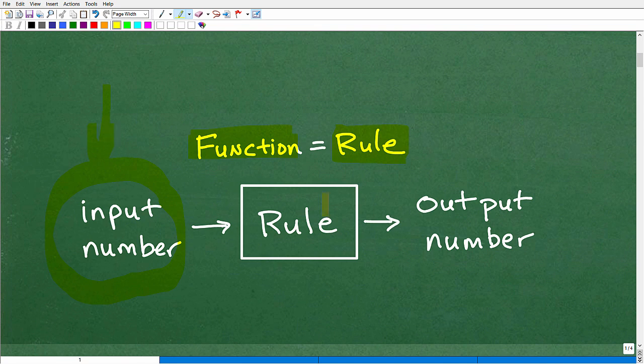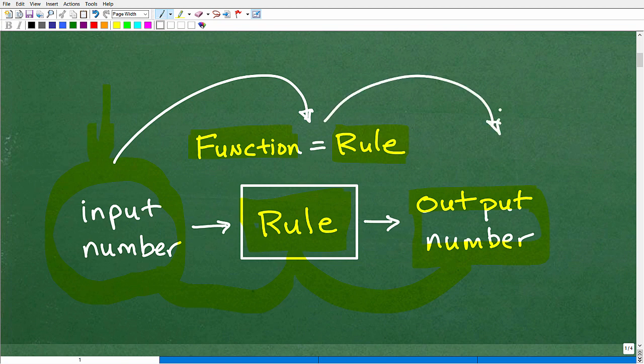And when I take that number, I'm going to apply a certain rule to it. And then I'm going to give you an output number. Okay. So this output number is going to be generated by taking this input number using this rule and then creating an output number, right? This little process here of taking an input number, plugging it into a rule, and then basically creating an output number is this concept of a function. This is the process of what functions do.